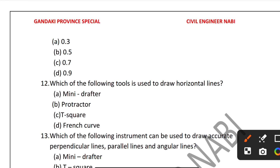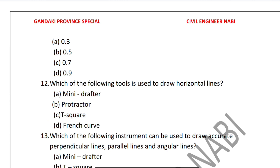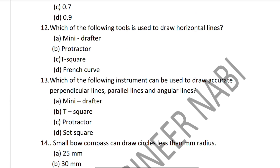Question 12: Which drawing tool is used to draw horizontal lines? The T-square is used to draw original horizontal lines. The T-square is the correct answer.